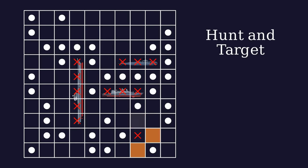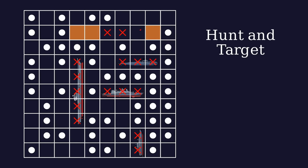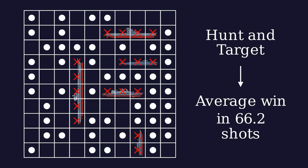By using this strategy, you'll on average sink all your opponent's ships in around 66 shots. But we can make it even better.